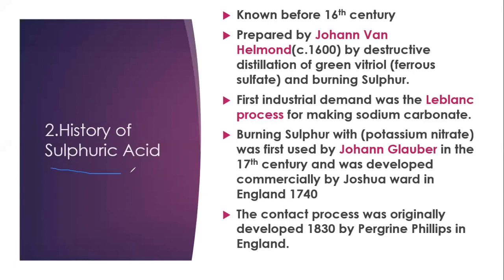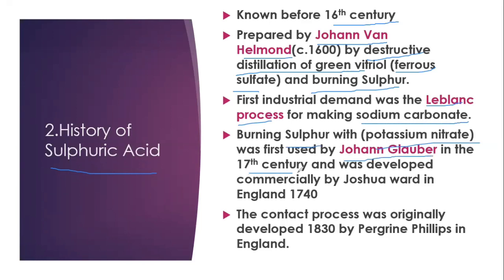We will see the brief history of Sulfuric Acid. Sulfuric Acid was known before the 16th century. It was prepared by John Van Helmond in the 16th century by destructive distillation of green vitriol (ferrous sulfate) and burning sulfur. The first industrial demand was the Leblanc process for making sodium carbonate. Burning sulfur with potassium nitrate was first used by John Glauber in the 17th century and was developed commercially by Joshua Ward in 1740 in England. The contact process was originally developed in 1830 by Peregrine Phillips in England.